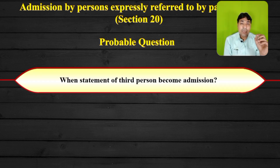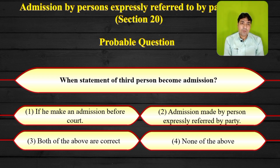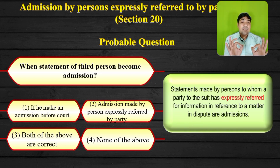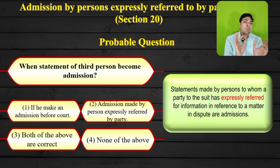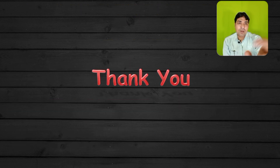Now, a probable question the examiner may ask: 'When does the statement of a third person become an admission?' The options are: (a) if we make an admission before the court, (b) admission made by a person expressly referred by a party, (c) both of the above are correct, (d) none of the above. Section 20 specifically states that a statement made by persons to whom a party to the suit has expressly referred — that person's statement becomes relevant as an admission. So the correct answer is the second option: admission made by a person expressly referred by a party becomes relevant under Section 20.